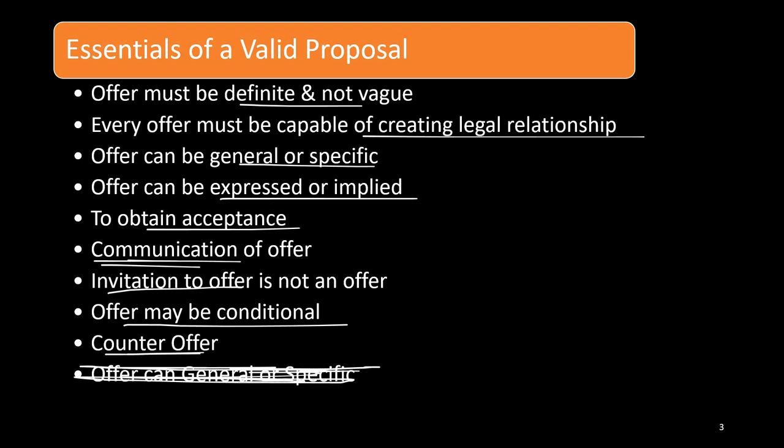The essential conditions for a valid proposal: first, the offer must be definite and not vague. Whatever you are trying to say should be definite and clear. For example, when I say I will buy your car for this price, it should be clear which car, the price, and all those details — they should be fixed. It should not be vague, meaning it should not create confusion. Your offer should never create confusion if you want your proposal to be valid.